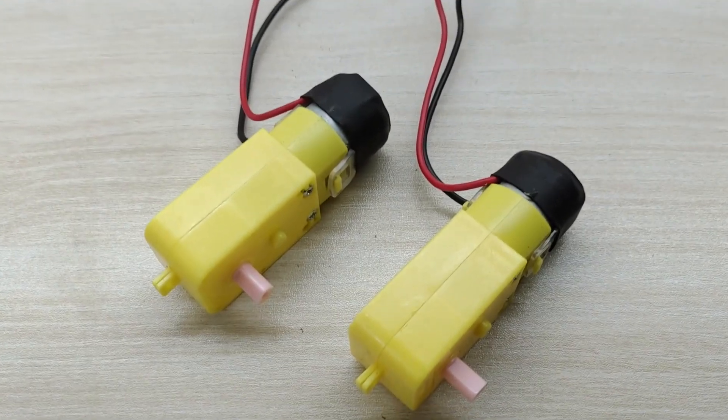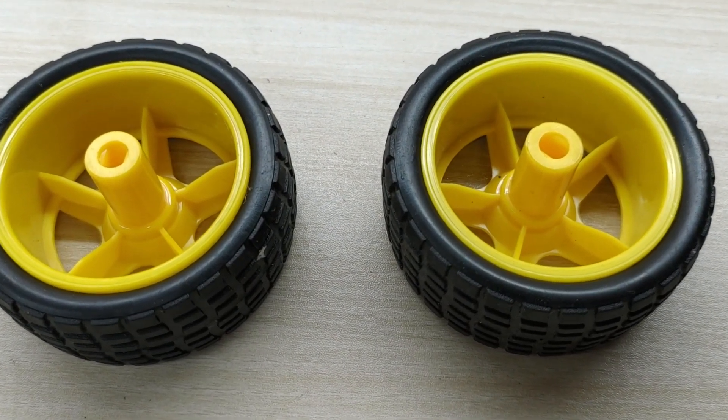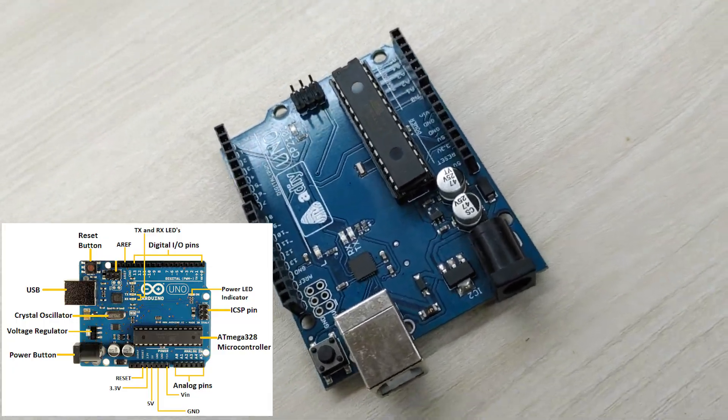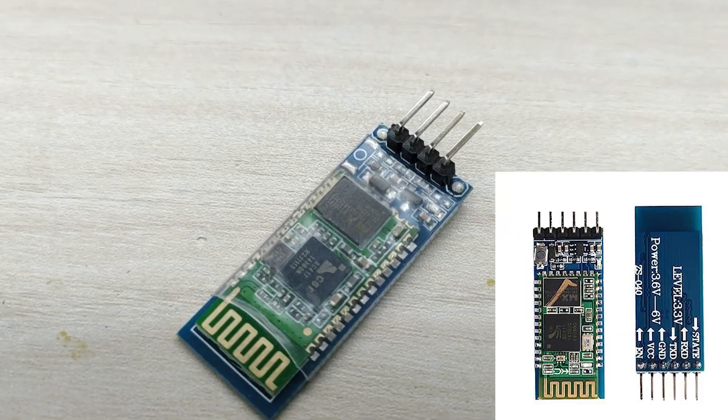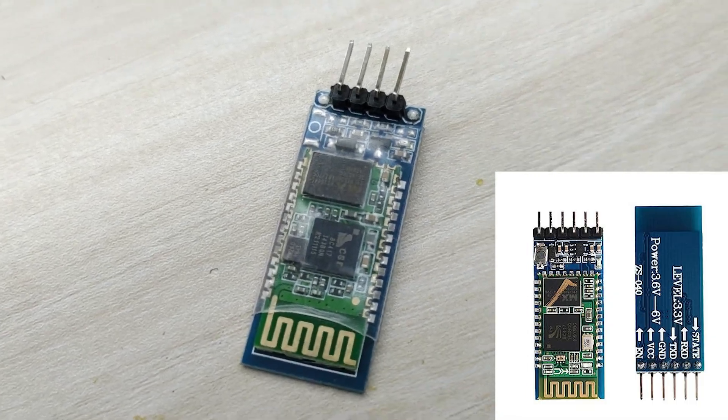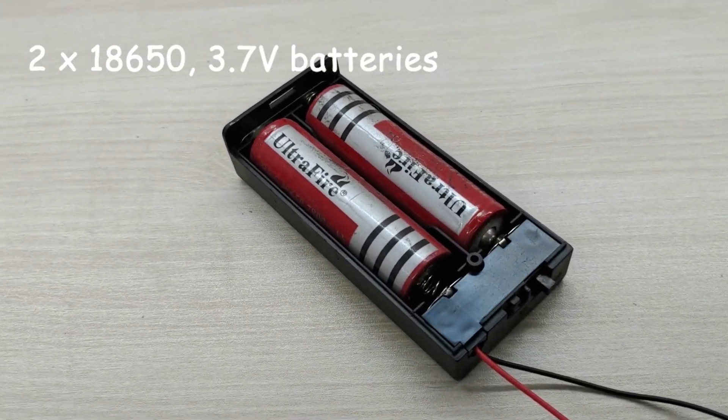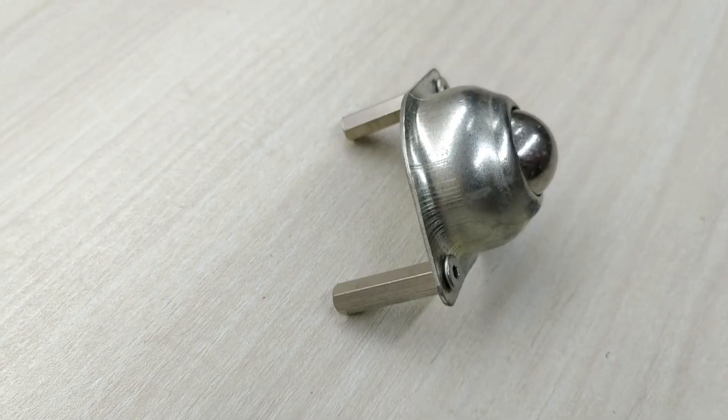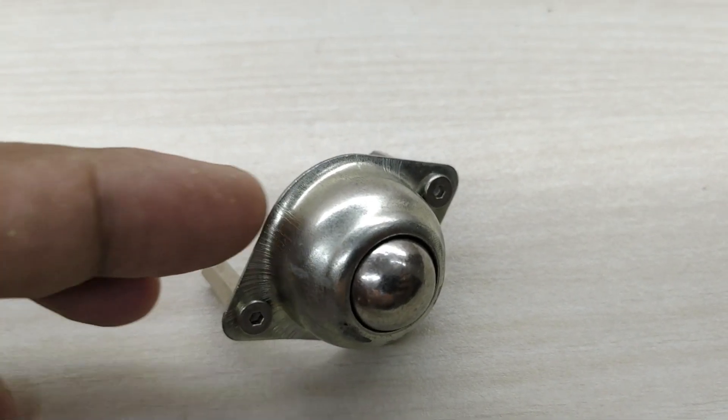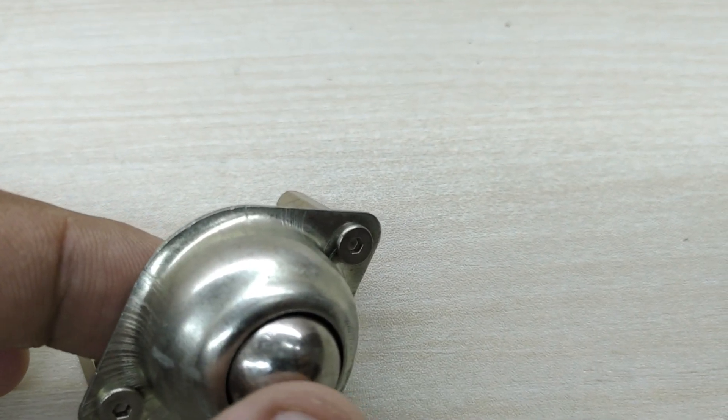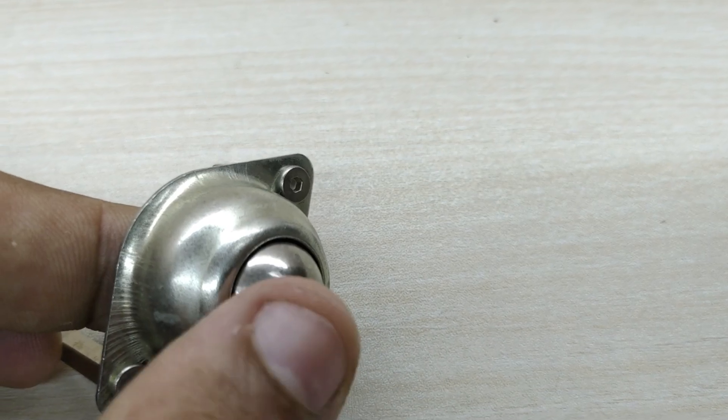For this project, you need two numbers of geared motors, two numbers of 65mm diameter wheels, Arduino Uno board, L298N Motor Driver Module, HC05 Bluetooth Module, a battery pack with two numbers of 18650 3.7V batteries and a caster wheel. The caster wheel has a ball inside it which can roll in any direction. Providing a caster wheel at the front helps the robot to quickly change direction.